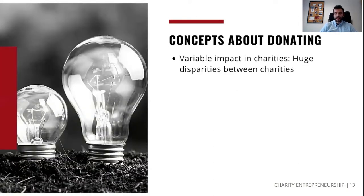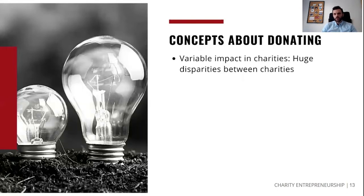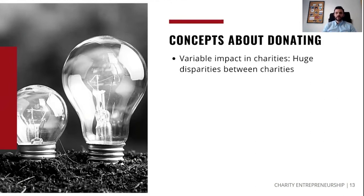Let's start with donating. This is probably the place the effective altruism movement has spent the most time and research thinking about. One interesting conclusion is that there's a large difference in impact between some charities. A default assumption most people have is that what charity you donate to isn't as important as whether you donate at all. But when you look at the evidence — trying to look at effect sizes and the impact of different charitable interventions — the disparities can actually be huge, even for charities with very similar outcomes.